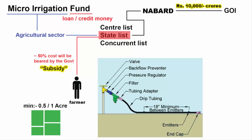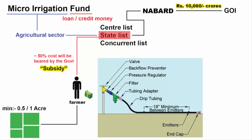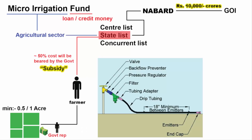One acre is approximately 60% of a football ground. As a farmer, you first have to spend money from your own pocket to install the system. After that, a government representative is going to assess your irrigation system. Once you get the approval, only then the subsidy money will be transferred to your bank account.